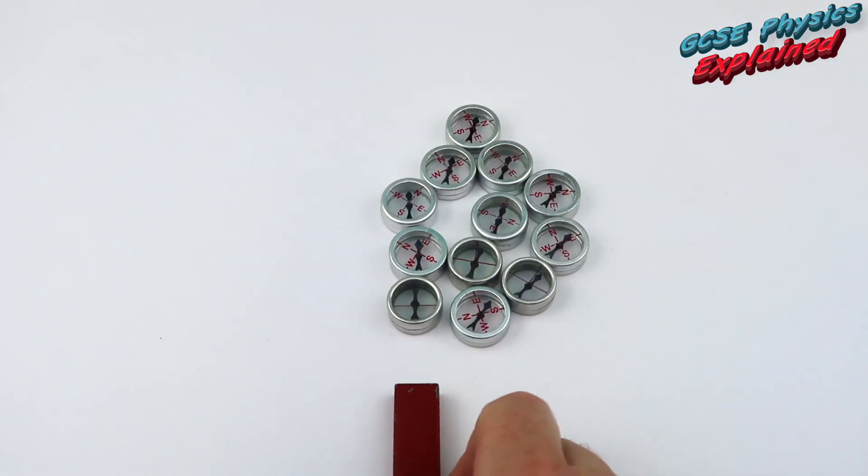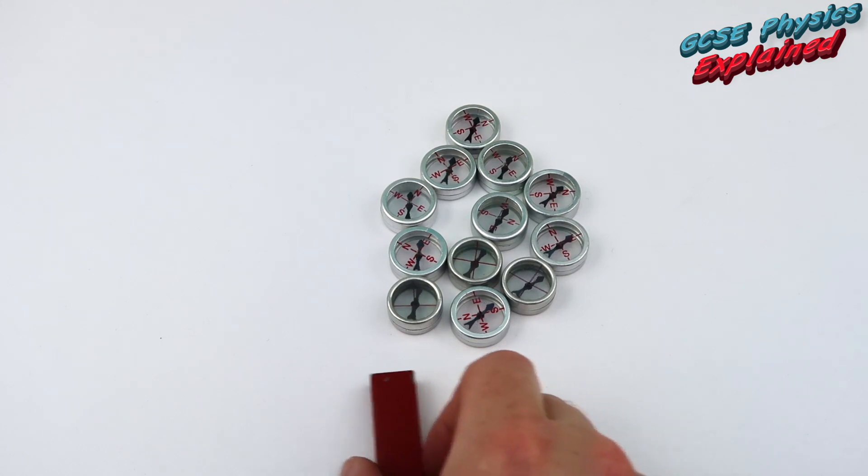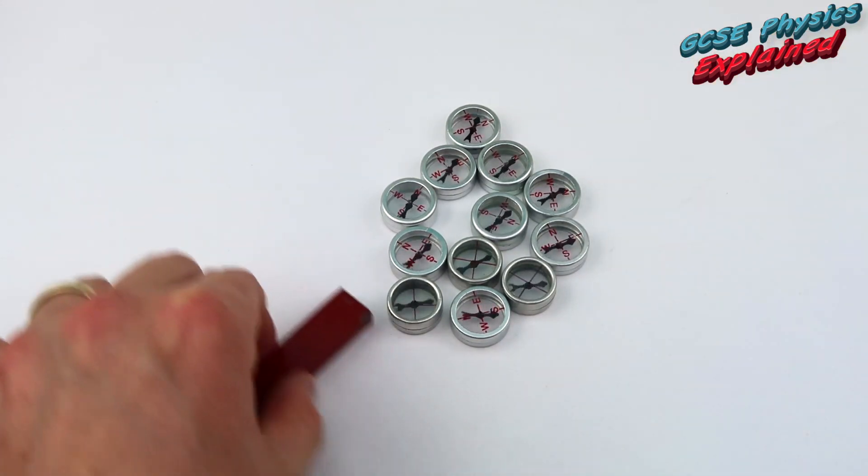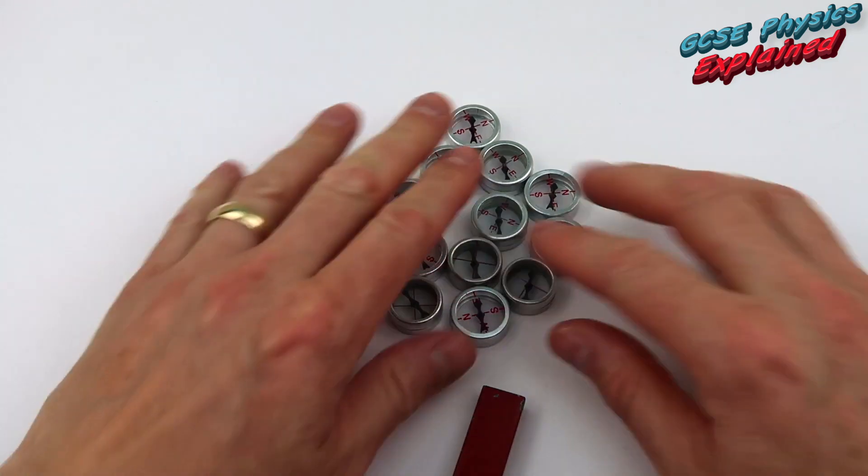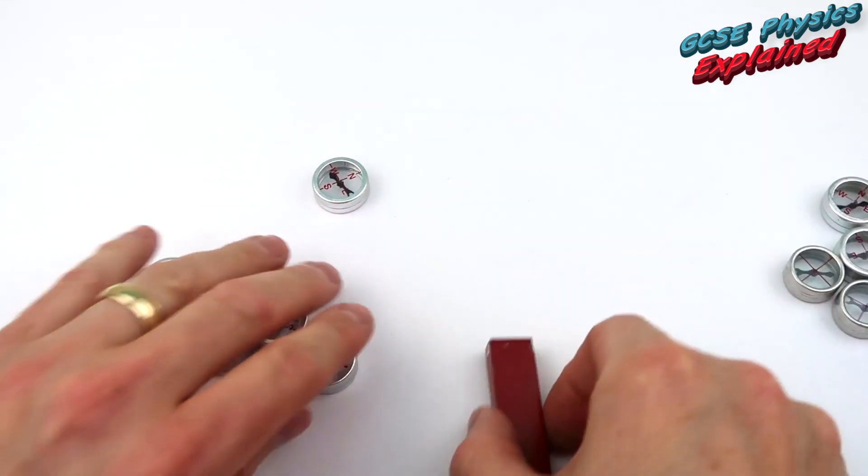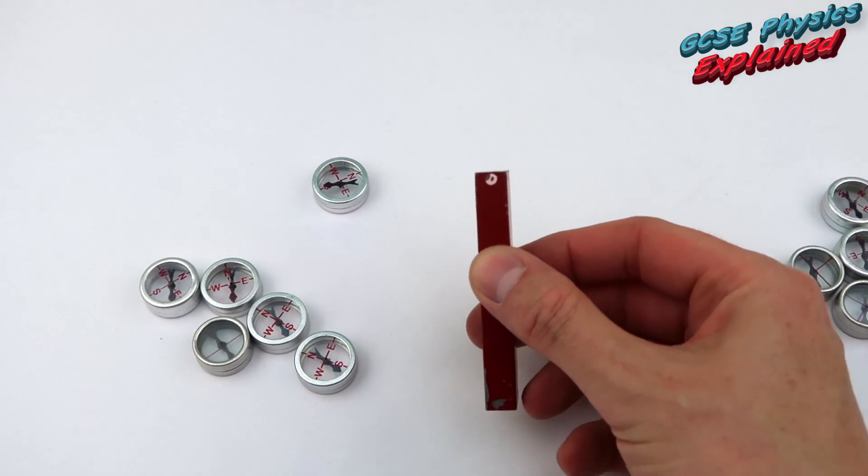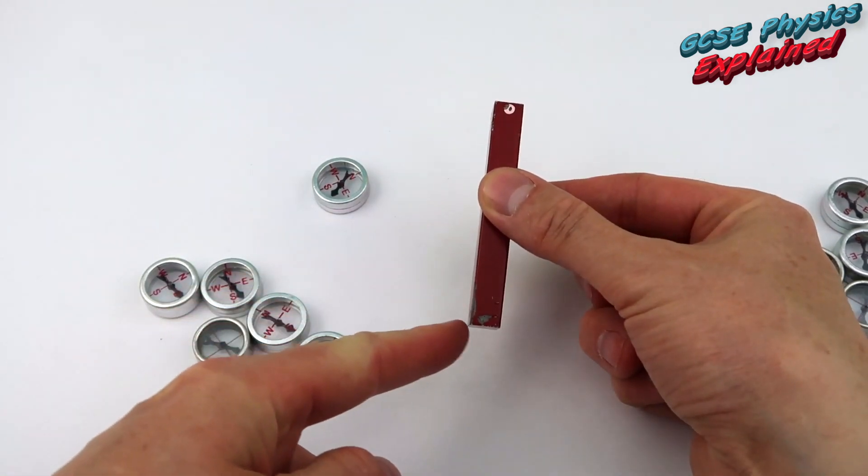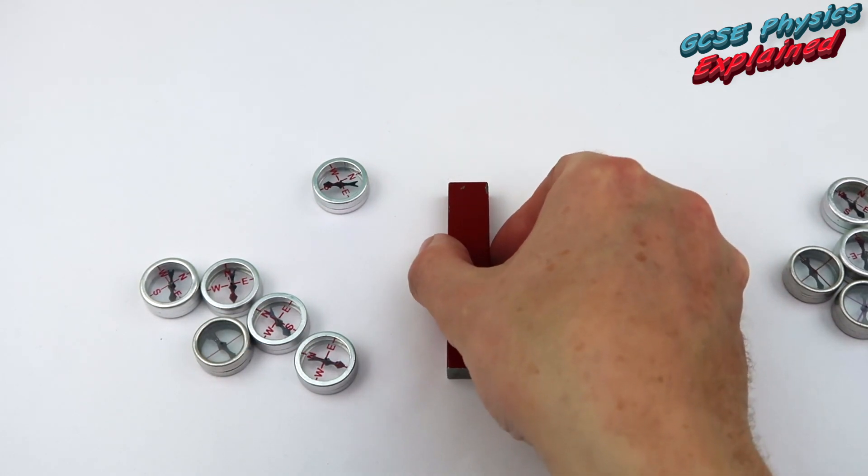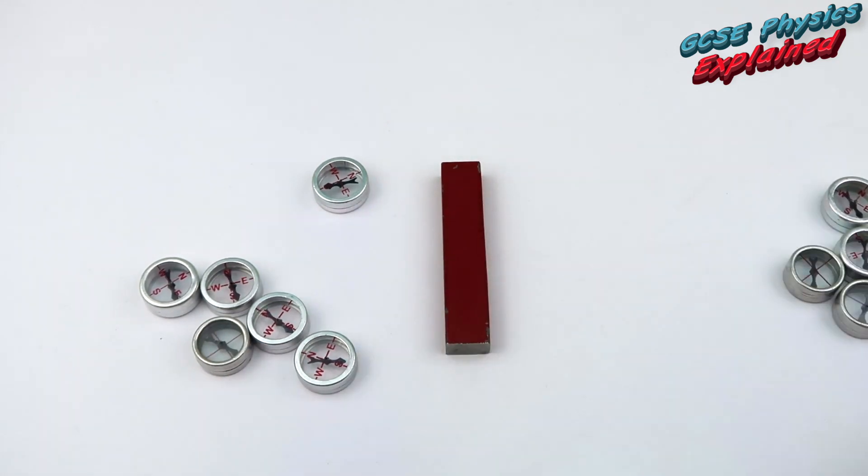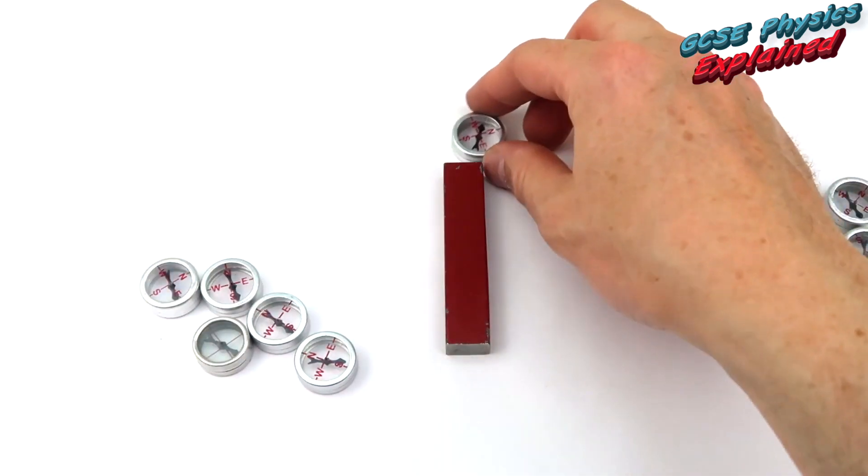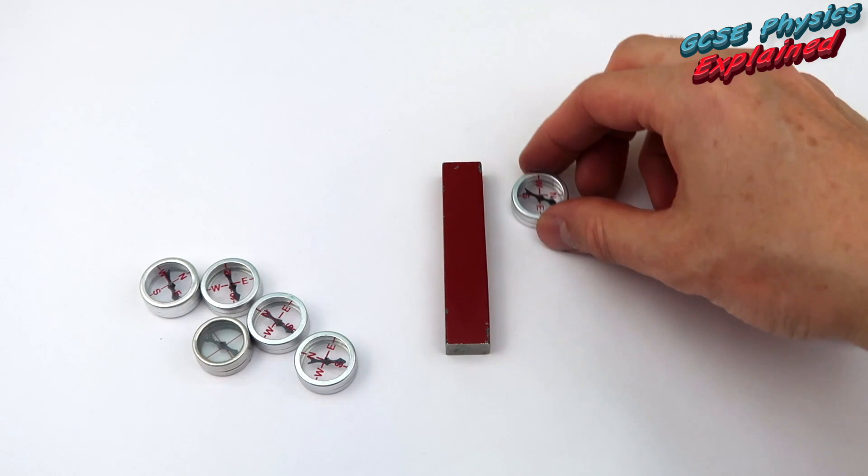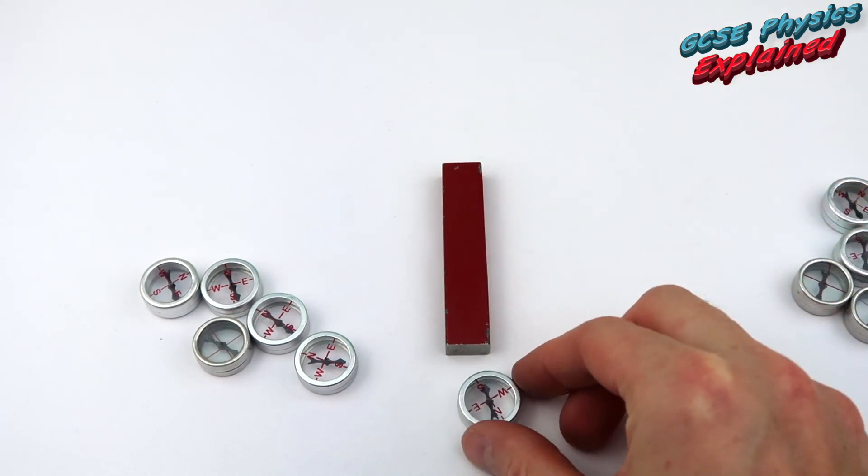Now you can use these compasses in order to plot the magnetic field of this bar magnet. We'll just move them out the way. That's the North Pole at the top and the South Pole at the bottom. Place that on your paper. Now what will happen is magnetic field lines come out of the North and go into the South.